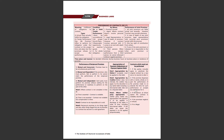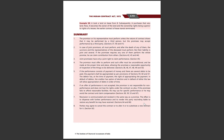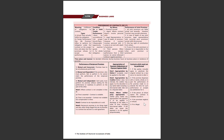Agar promisee aapki performance ko remit kar deta hai toh bhi aapko pehle wala perform karne ki zaroorat nahi hai. Agar contract voidable hai toh contract perform karne ki zaroorat nahi hai. Agar promisee neglect karta hai ya refuse kar leta hai performance karne se, toh woh aapko perform karne ki zaroorat nahi hai. Aur agar woh illegal hai toh woh void hai aur void contract perform nahi kar sakte. This is the summary of Unit 4 of ICA 1872 – thank you so much for watching.